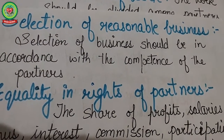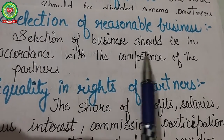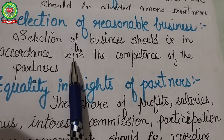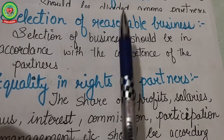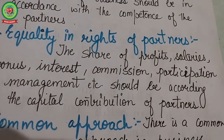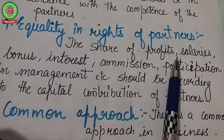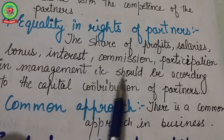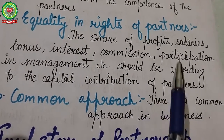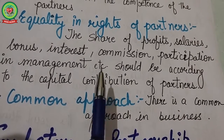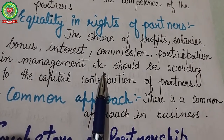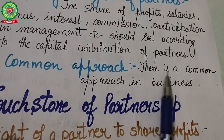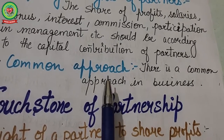Next is selection of a reasonable business: the business selected should be in accordance with the competence of the partners, and the main sources and place of business should be suitable. Next is equality in rights of partners: the share of profits, salaries, bonus, interest, commission, and participation in management should all be according to the capital contribution of partners, so there is no discrimination. Last is common approach: a common understanding between the partners in the business.